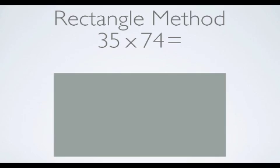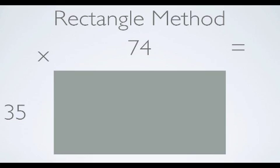To solve a multiplication problem using the rectangle method, you must first draw a rectangle. Then you label the dimensions of the rectangle. We will call the length 35 and the width 74 because those are the factors for our multiplication problem.